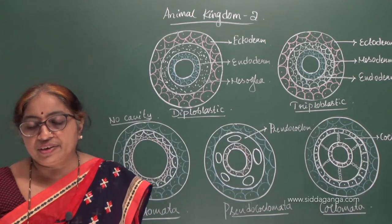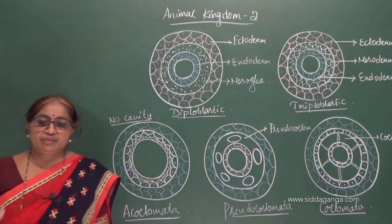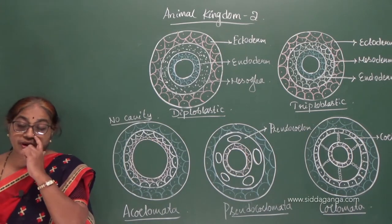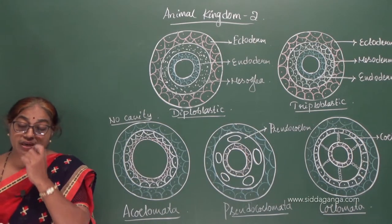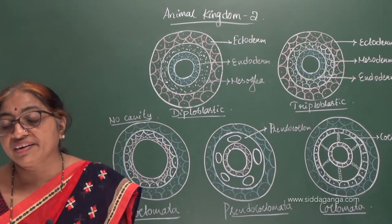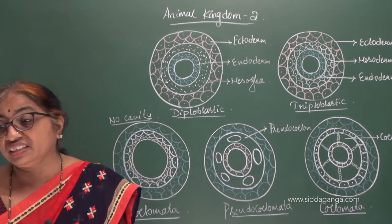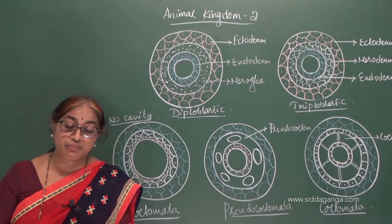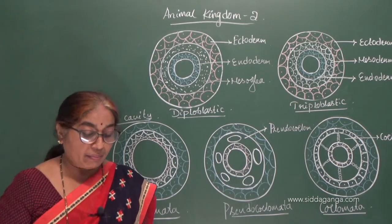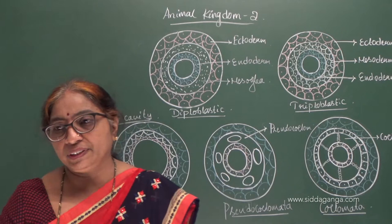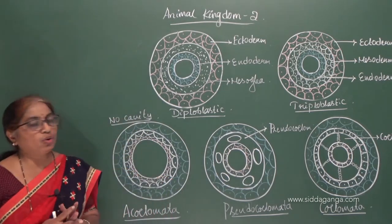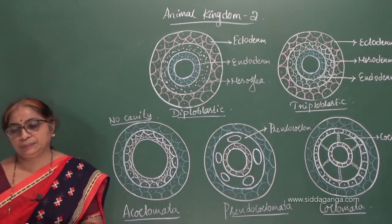Bilateral symmetry means if you cut the organism in only one plane — from top to bottom, longitudinally — it gives two identical halves. They come under the group Bilateria. Examples range from platyhelminthes to chordates.